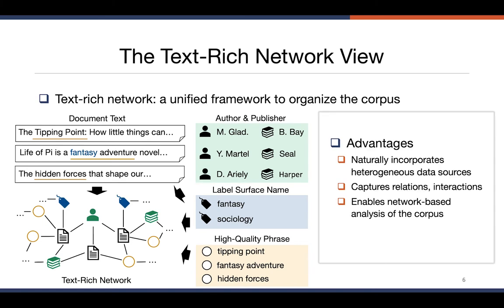There are several advantages of using a text-rich network to represent a corpus. It naturally incorporates heterogeneous data sources, captures their relations and interactions, and moreover it also enables network-based analysis of the corpus, for example ranking or clustering in the network.